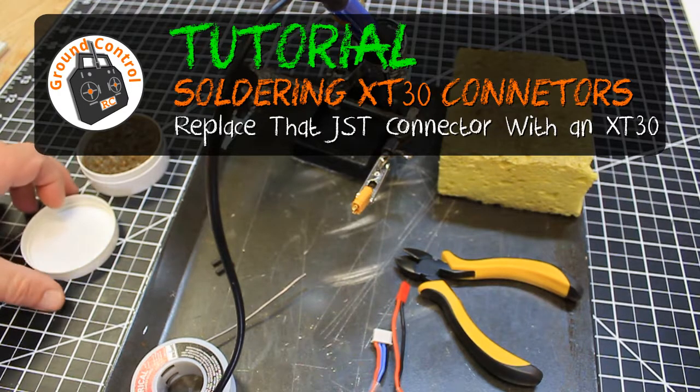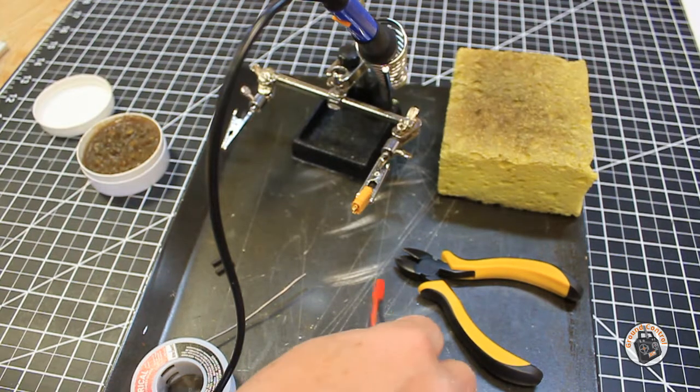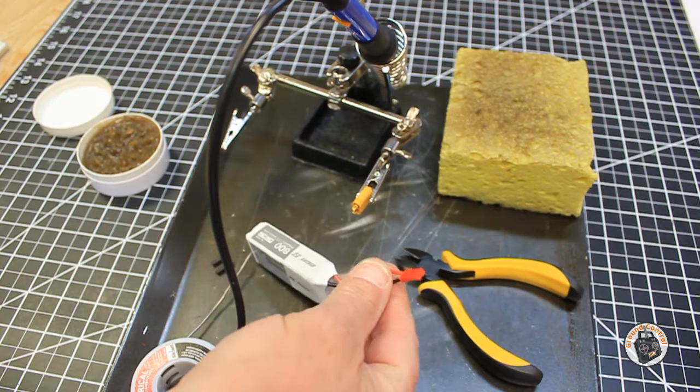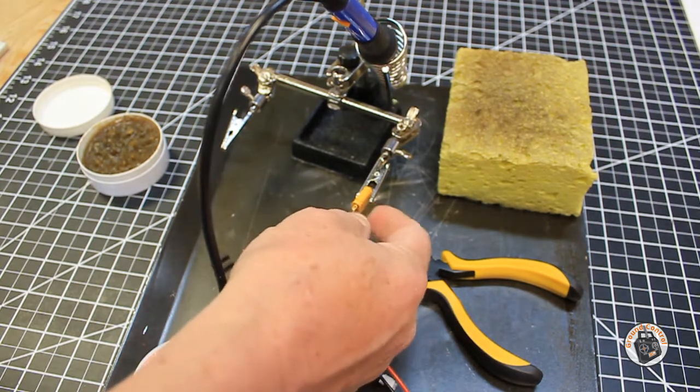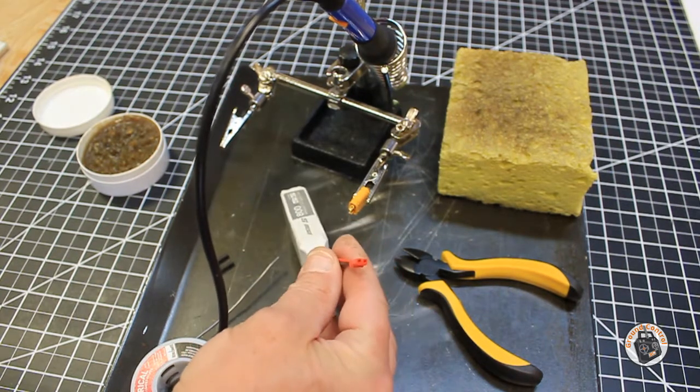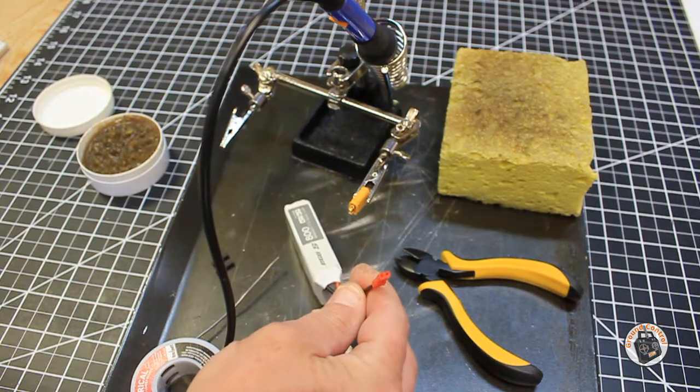Welcome to Ground Control RC. We are going to be replacing a JST connector on this 3-cell LiPo to an XT30 connector because this is going to go on one of my many park jets.